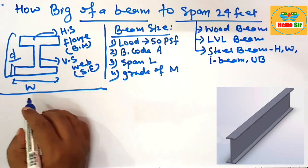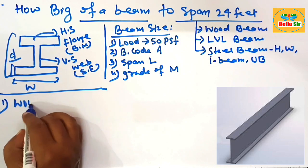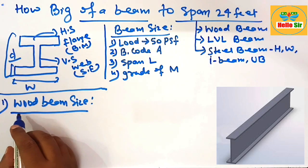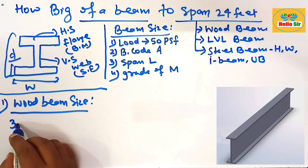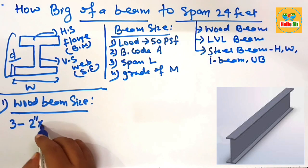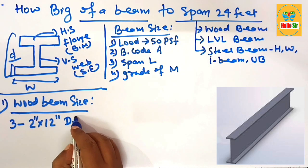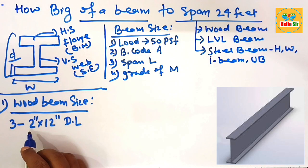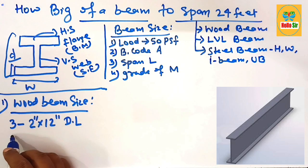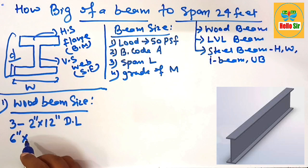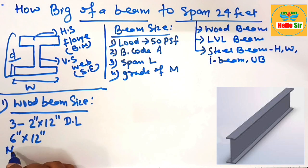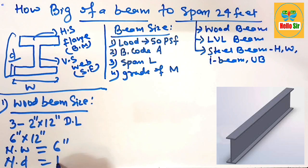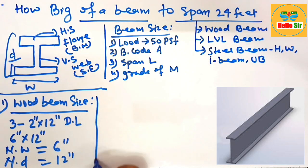For the wood beam size required to span 24 feet, our recommendation is to use three pieces of 2-inch by 12-inch dimensional lumber, either made of Douglas Fir-Larch (DFL) or Southern Yellow Pine. This can also be written as 6-inch by 12-inch, where the nominal width is about 6 inches and the nominal depth is about 12 inches.